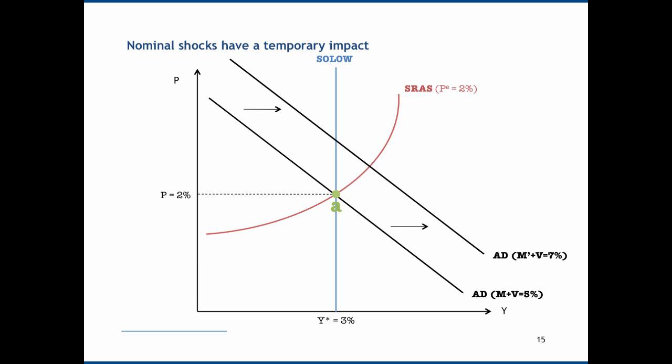We start at point A with Y star 3% and P 2%, then shift the aggregate demand curve outwards to our new rate of 7%. What we do now is move up the short run aggregate supply curve. The fact that inflation is running higher than expected means entrepreneurs are somewhat fooled into increasing output, and therefore we have an increase in inflation and an increase in real GDP growth. We get to point B. Point B must be temporary — it cannot be an equilibrium, because at point B, real GDP growth is greater than Y star, implying capital consumption, which is unsustainable.